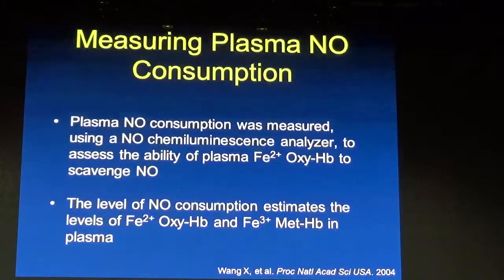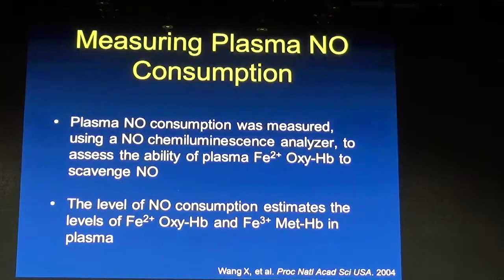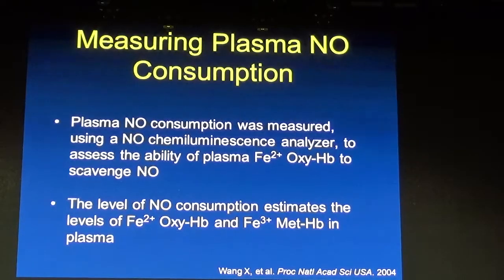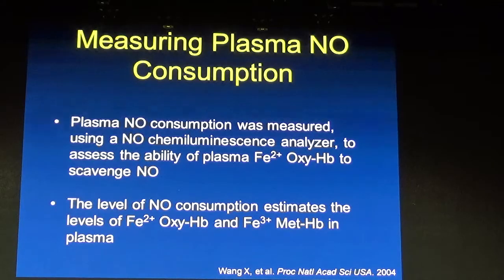We measured plasma nitric oxide consumption using a chemiluminescence analyzer to assess the ability of plasma iron 2+ oxyhemoglobin to scavenge nitric oxide. The level of nitric oxide consumption estimates the level of oxyhemoglobin in the plasma.